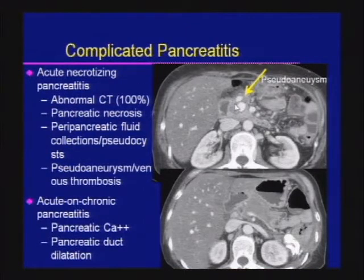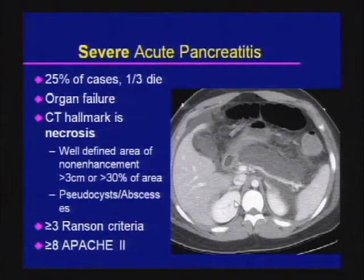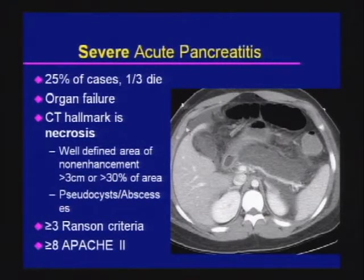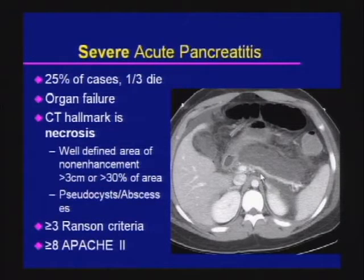Here is a complication of pancreatitis: a dilated vascular structure representing an aneurysm of the gastroduodenal artery, with areas of pancreatic necrosis visible. For severe acute pancreatitis, these patients have significantly higher mortality. To use the term severe acute pancreatitis, you want to see an area of non-enhancement greater than three centimeters or involving greater than 30% of the area of the pancreas.